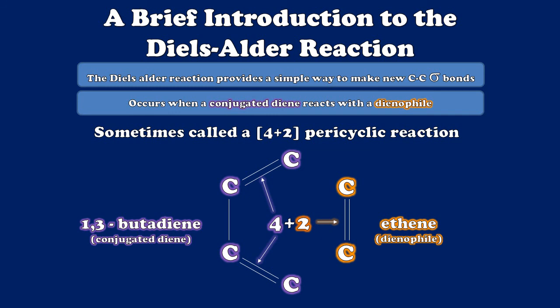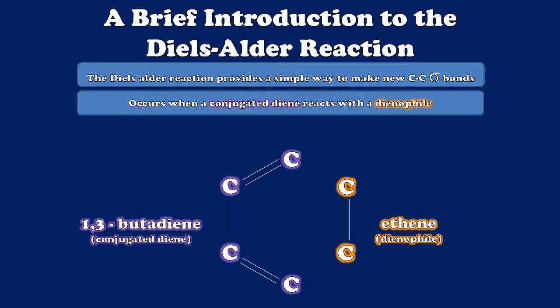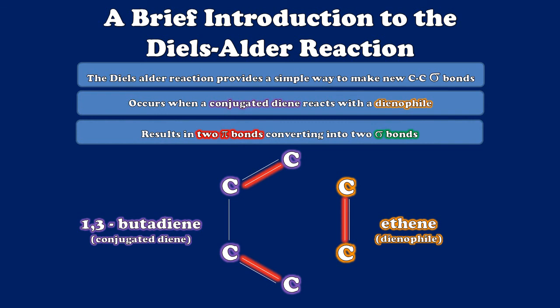What drives the Diels-Alder reaction is the fact that two pi bonds from our collection of reagents will be exchanged for two sigma bonds, which are more stable and therefore lower in energy. So in the concerted Diels-Alder reaction, we convert two pi bonds into sigma bonds, creating a new cyclic alkene. Diels-Alder reactions are driven by enthalpy, whereas they're actually disfavored entropically because we're putting two molecules together to form one. It's a good thing those pi bonds are being exchanged for sigma bonds, because that pushes the free energy of this reaction into a favorable area.